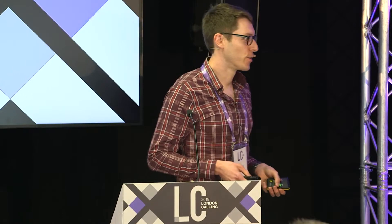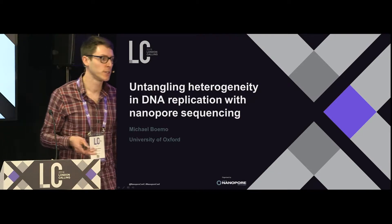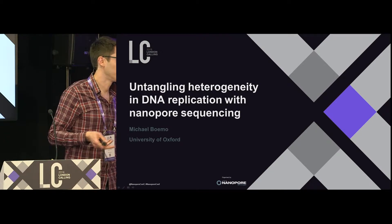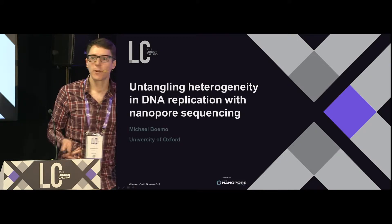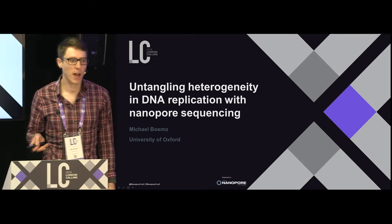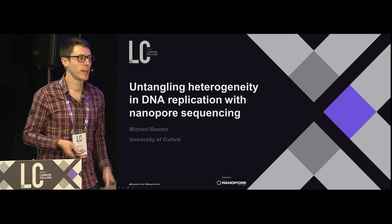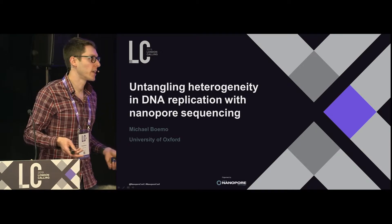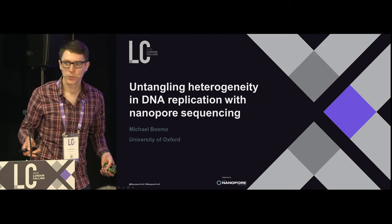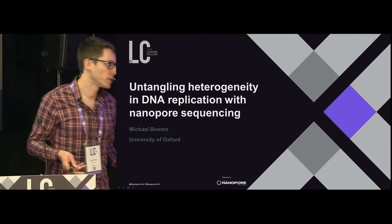In the time it takes me to say this sentence, your body will have finished growing about five million new cells. And in each of those cells, all of the DNA has been replicated. DNA replication is really important because DNA replication errors are one of the early drivers for genome instability. We have methods to look at how a group of cells replicate their DNA on average, but we really don't have a way to see how this happens in individual molecules.